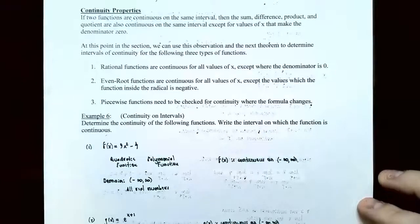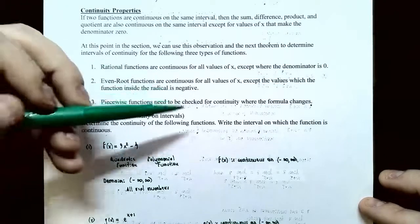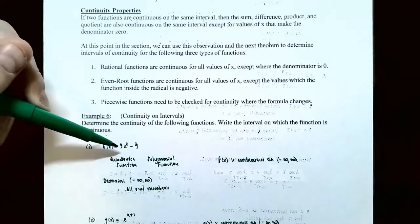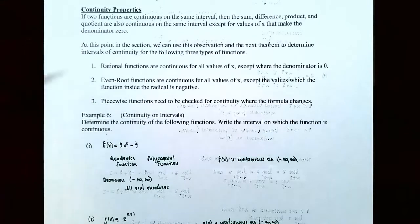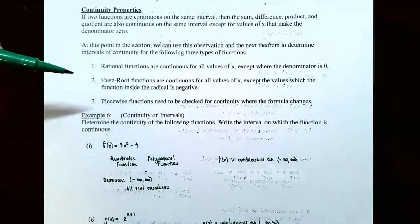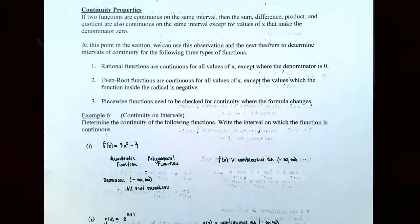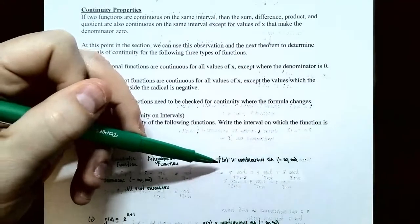Example 6: Continuity on intervals. Determine the continuity for the following functions and write the interval where each function is continuous. Number 1: f(x) = 9x² − 4. This is a quadratic — a polynomial function — whose domain is all real numbers, (−∞, ∞). Polynomial functions have no jumps, holes, or vertical asymptotes, so the function is continuous on (−∞, ∞).